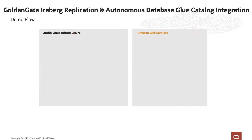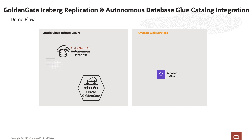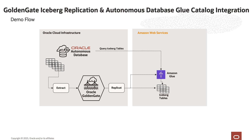Now let's view our demo flow. For the demo, we have several source tables in Oracle Autonomous Database, and our target is Iceberg tables in Amazon Glue. I have a GoldenGate deployment running on OCI with an extract process which captures change data in real time from the source tables. I have an engine-less Iceberg replicate which will write the data from source tables into my target Glue database in Iceberg format. Then I will use Autonomous Database catalog to access and query the Iceberg tables created by GoldenGate, validating replication just by running SQL commands — no Spark engine or AWS Athena required.